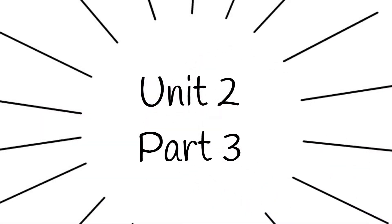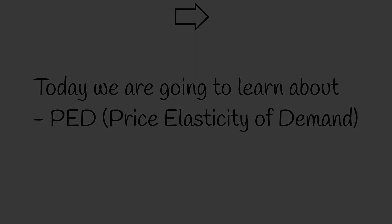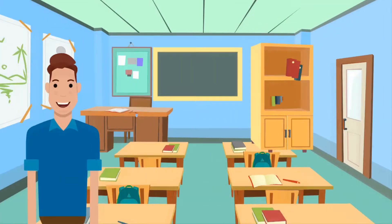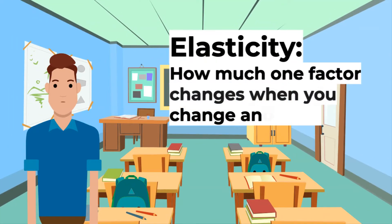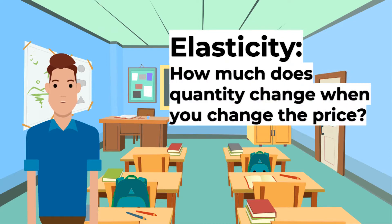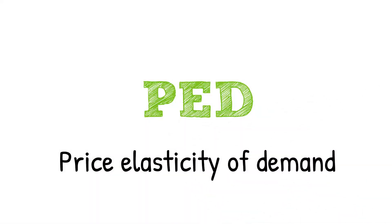Hi and welcome to our series on IGCSE economics. This is Unit 2, Part 3. In today's episode we're going to be learning about PED. If you haven't seen our previous videos, please click on the card above. Elasticities are basically how much one factor changes when you change another — for instance, how much does quantity change when you change the price. Firstly, let's talk about PED: price elasticity of demand.